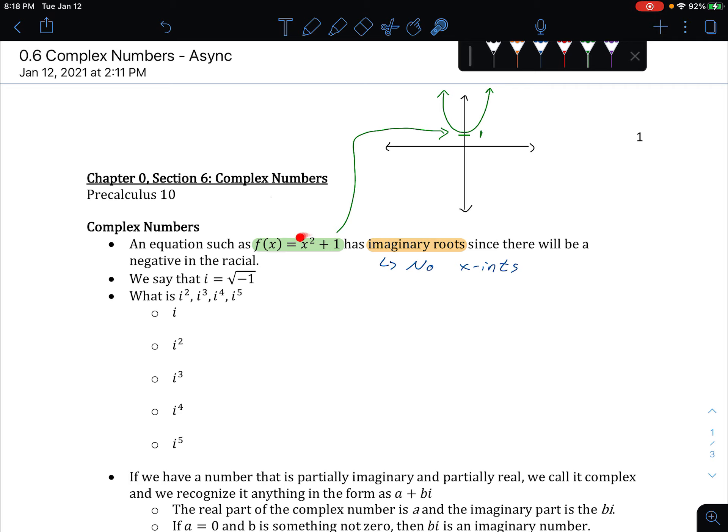Stuff like this x-squared plus numbers usually for us meant we couldn't factor it any further because it yielded imaginary roots. Now that we're talking about imaginary roots, we can learn how to deal with them so we can better find solutions to equations like this or functions like this. We know imaginary roots are ones where there are a negative in the radical.